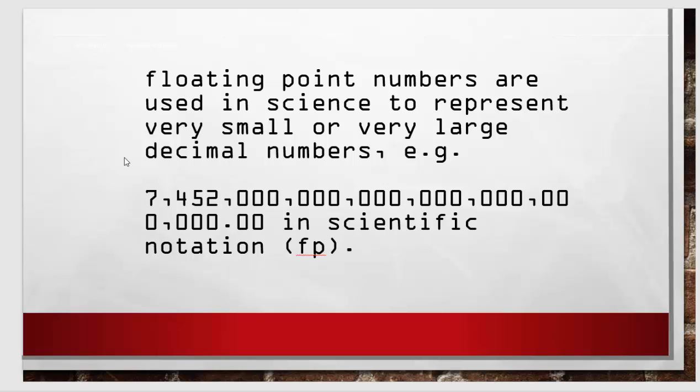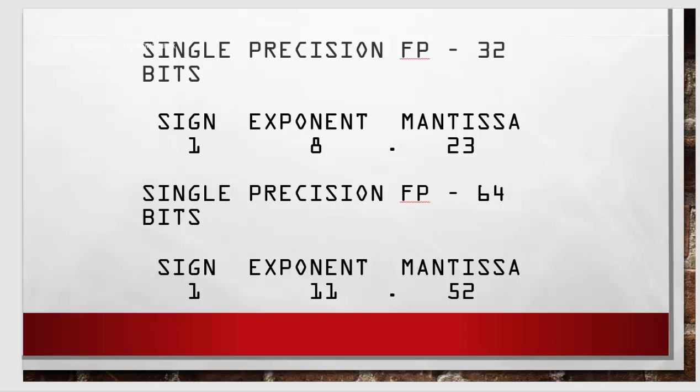You can represent numbers that are quite large, often used in scientific and financial number crunching applications. Here's an example of a single precision 32-bit floating point number: the first bit is for the sign, followed by 8 bits for the exponent and 23 for the mantissa. With a 64-bit floating point value, we have the first bit for the sign, 11 bits for the exponent, and 52 for the mantissa.